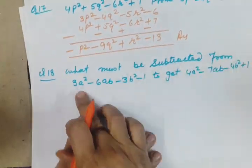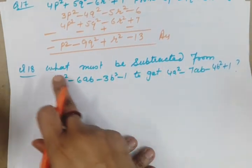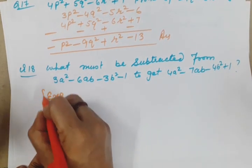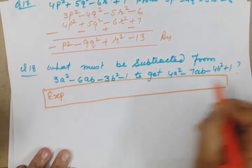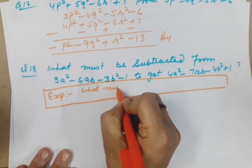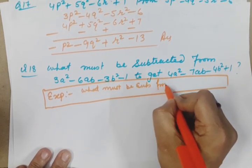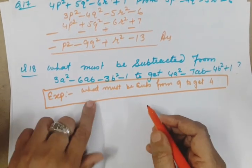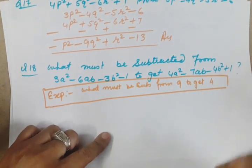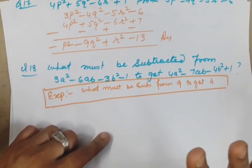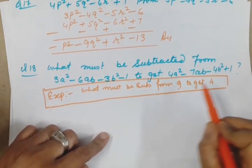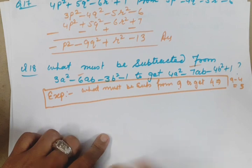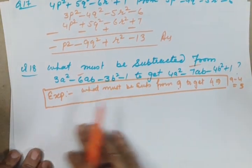Now move to question 18. Question 18 is asking what must be subtracted from 3a² -6ab -3b² -1 to get 4a² -7ab -4b² +1? Let me give you an example - you don't have to write this. If we ask what must be subtracted from 9 to get 4? Which number? If we do 9 minus 4, we get 5. If we subtract this value, we will get the same answer. If you want to do row method, let the number to be subtracted be x.